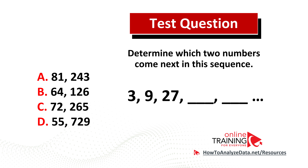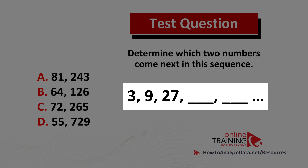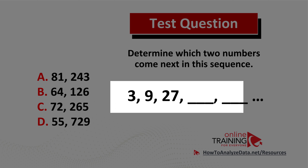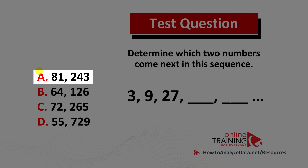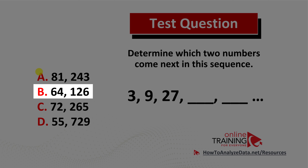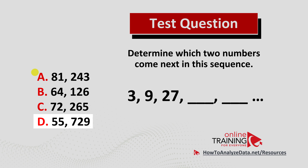Let me share with you an interesting question which tests your reasoning skills. Determine which two numbers come next in this sequence. You have a sequence of numbers and four choices: choice A 81 and 243, choice B 64 and 126, choice C 72 and 265, and choice D 55 and 729. Do you think you know the answer? Now might be a good time to pause this video.